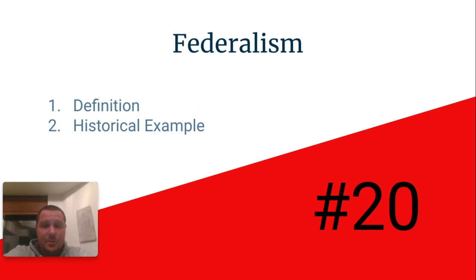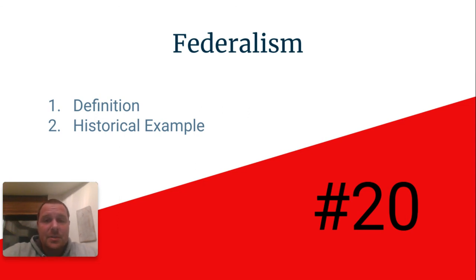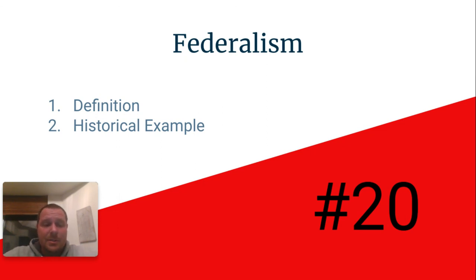The national government is going to have a lot of the more significant powers like declaring war, coining money, regulating commerce, and things like that. But the states are left with a significant amount of power. So again, in a federal system like what the United States has, power is divided or shared between the national government and the state governments.